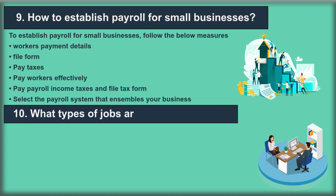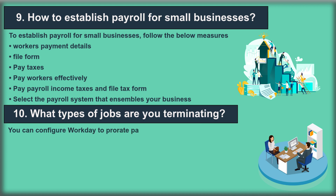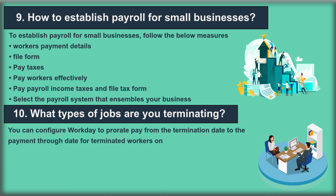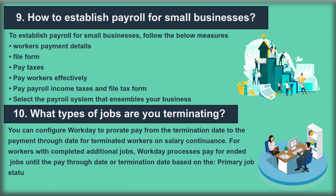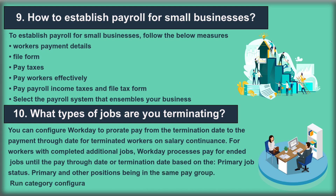Question 10: What types of jobs are you terminating? You can configure Workday to prorate pay from the termination date to the payment-through date for terminated workers on salary continuance. For workers with completed additional jobs, Workday processes pay for ended jobs until the pay-through date or termination date based on primary job status. This also involves primary and other positions being in the same pay group and run category configuration.